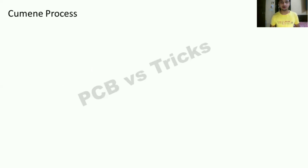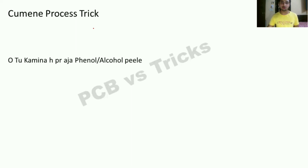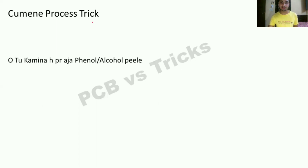Now let's move on to our trick. In this trick, we will imagine a situation. Imagine that you are sitting somewhere having a drink, and a very small friend comes to join you. You offer your friend company. In this trick, O2 is that small friend. And you will have phenol or alcohol as the result.